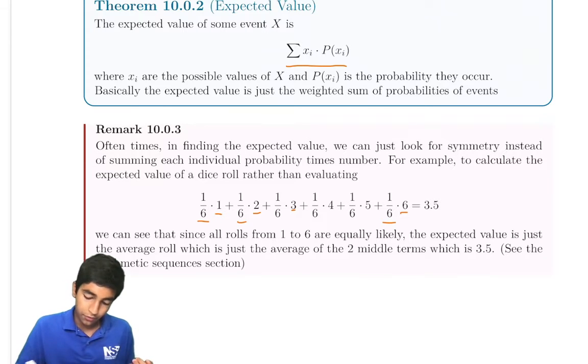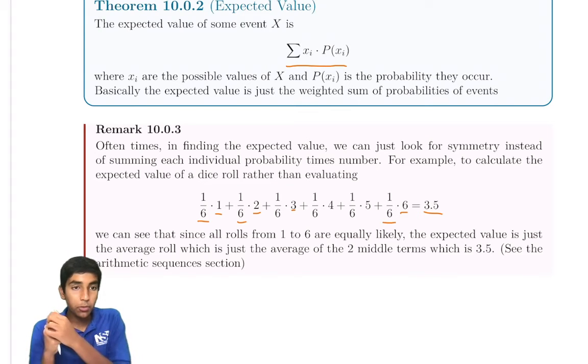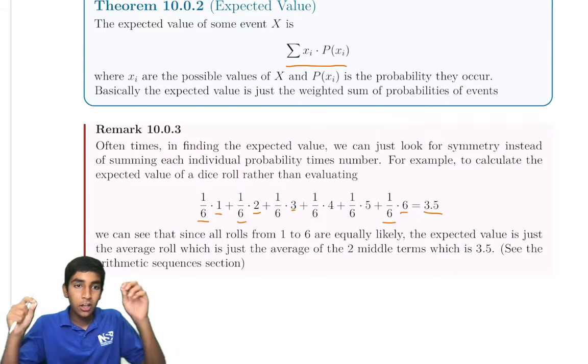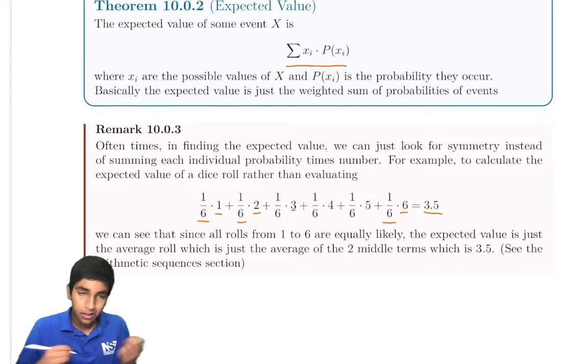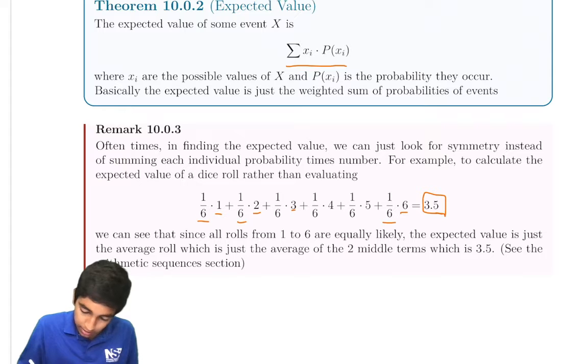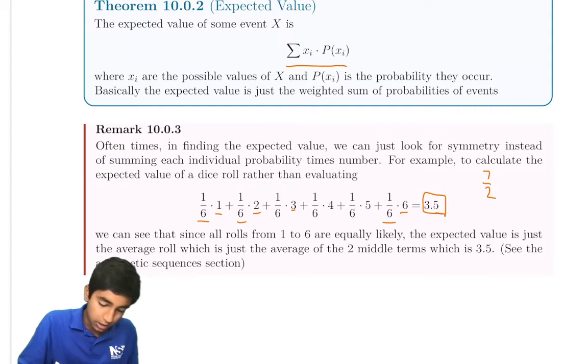In this case, it's 3.5 because all the rolls from one to six are equally likely. But there's a shortcut in this case because it's symmetric, all the numbers from one through six evenly covered. Just take the average of one and six, 3.5 directly. Because one plus six divided by two is seven over two. And it's symmetric for all values in between. Two and five are symmetric, three and four are symmetric, about 3.5.